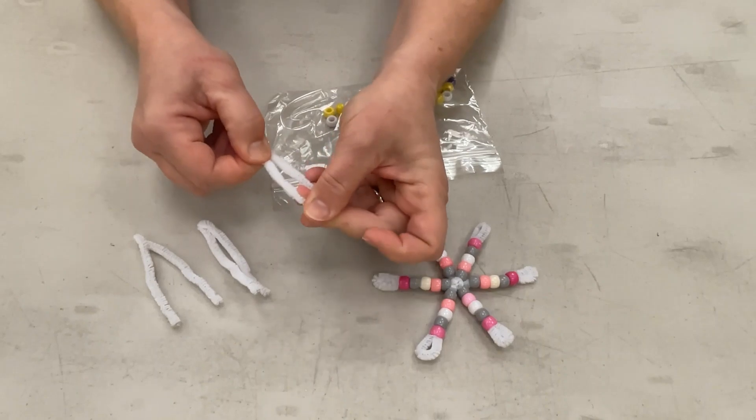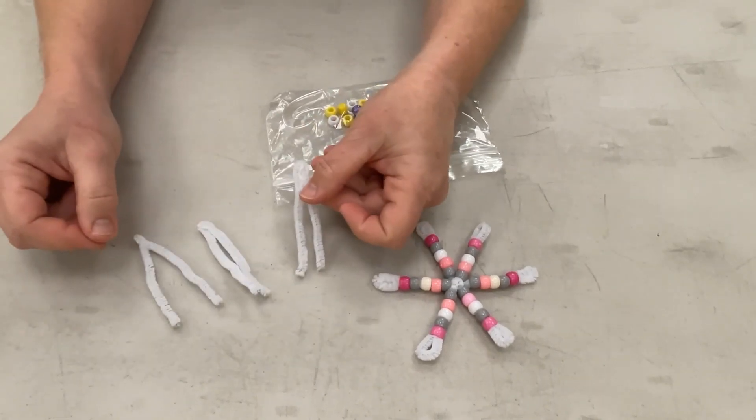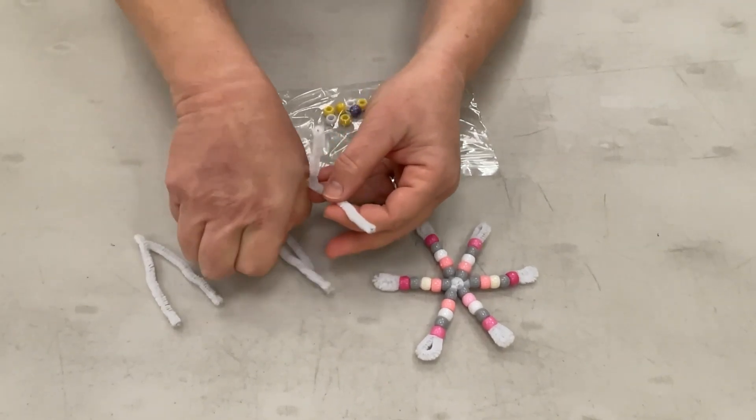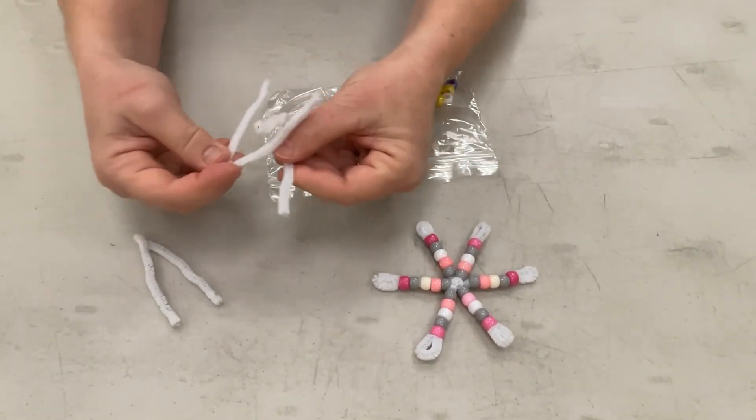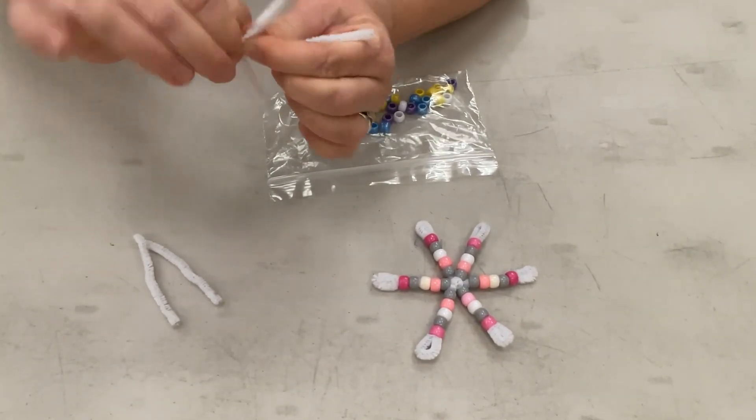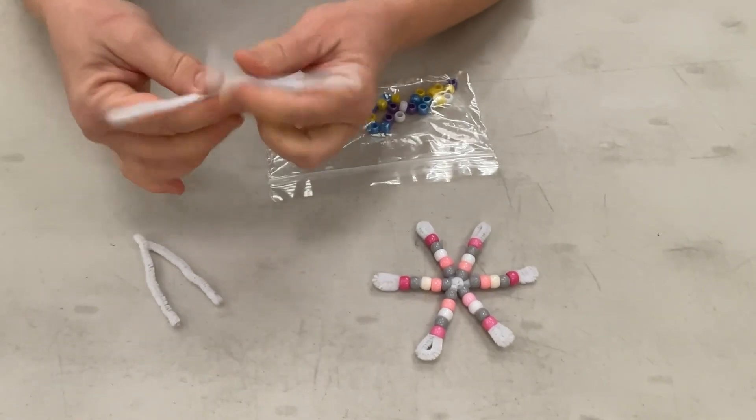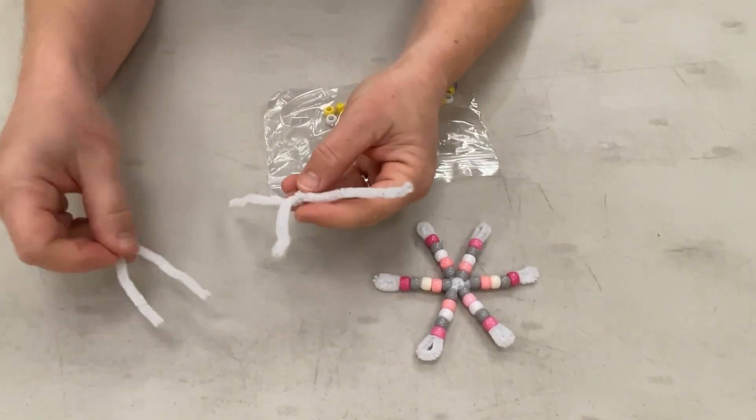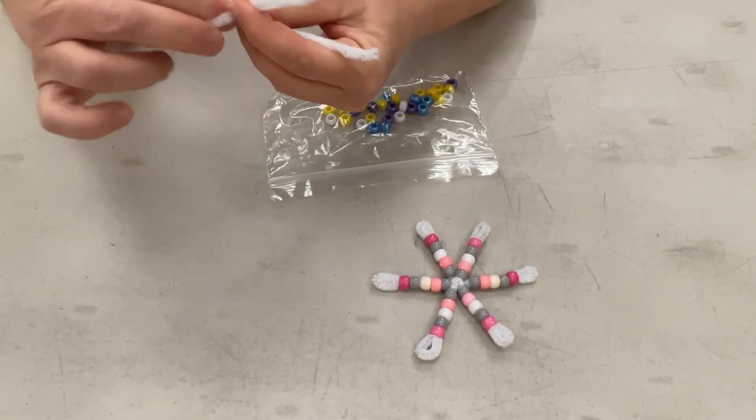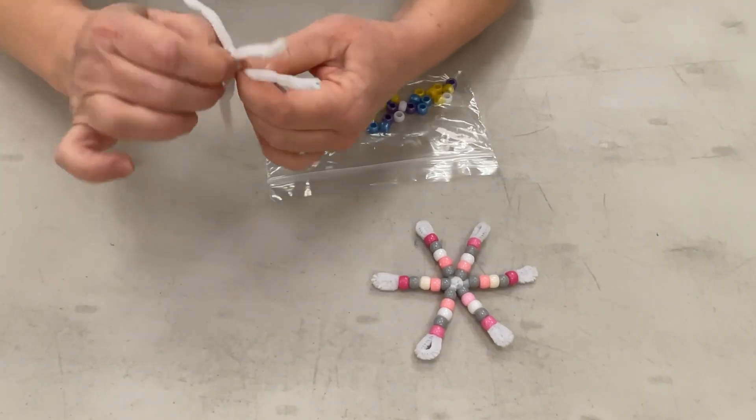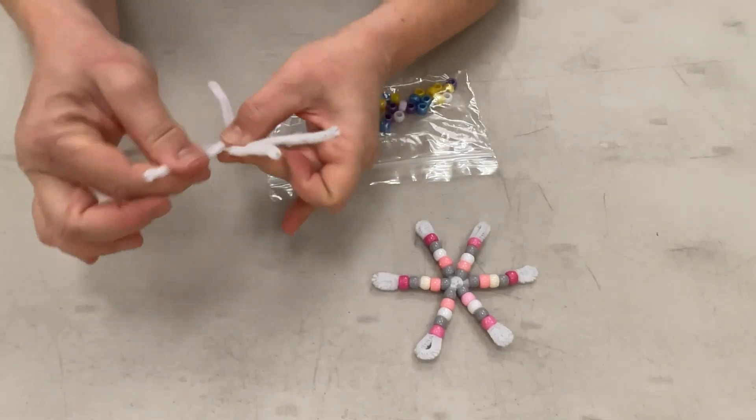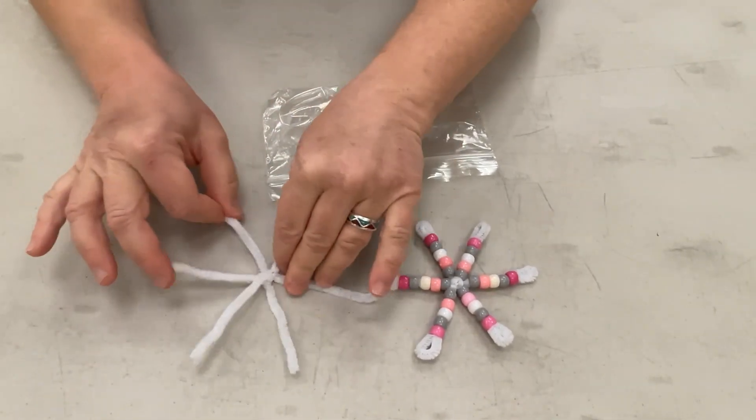Once we've folded them into quarters, we're going to take them and twist them together in the middle. So we'll take two halves, open them back up, cross them, and twist them together. Then we'll take our third half and twist it over the two, like so. We now have a six-sided snowflake.